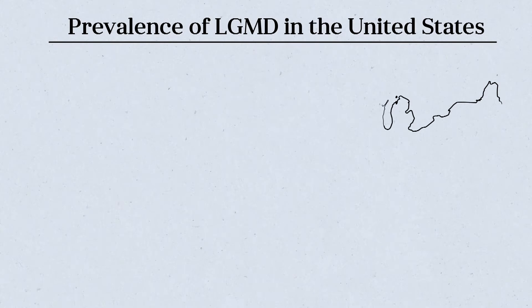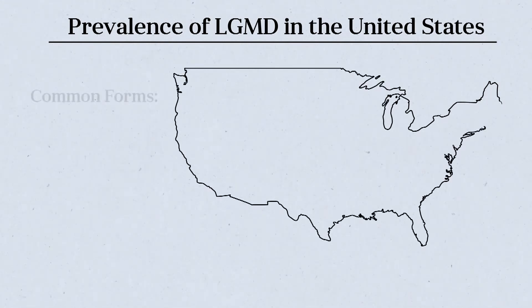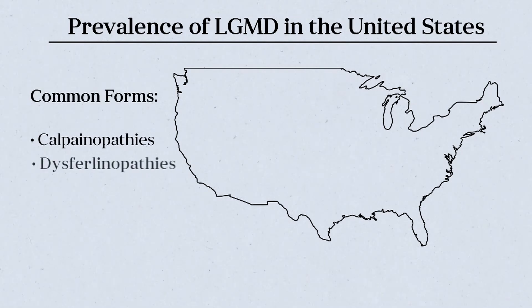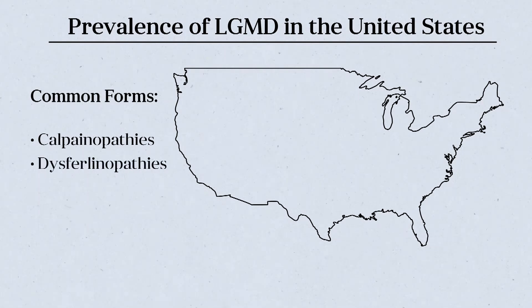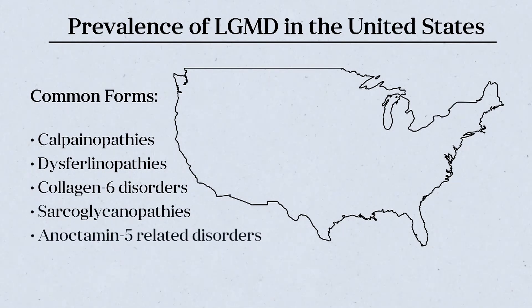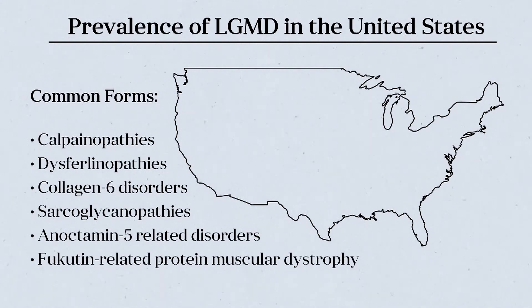The relative prevalence of limb-girdle muscular dystrophies has been ascertained throughout the United States. Among the most common forms are the calpainopathies, dysferlinopathies, collagen-6 disorders, sarcoglycanopathies, anoctamin-5-related disorders, and Fukutin-related protein muscular dystrophy.